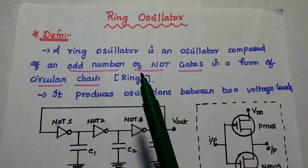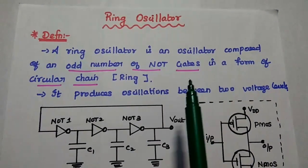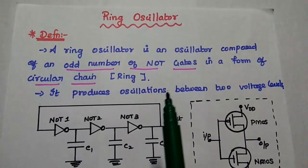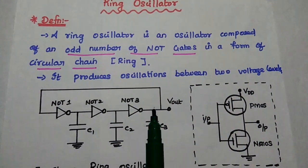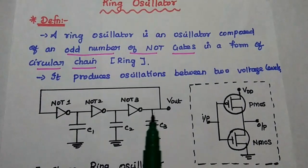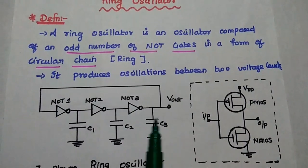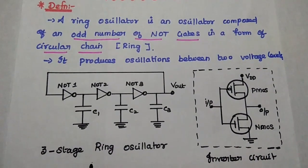Ring oscillator is an oscillator which is composed of an odd number of NOT gates in a form of circular chain, that is ring form. It produces oscillations between two voltage levels, that are positive and negative threshold voltage levels of this NOT gate. NOT gate is also known as inverter circuit.